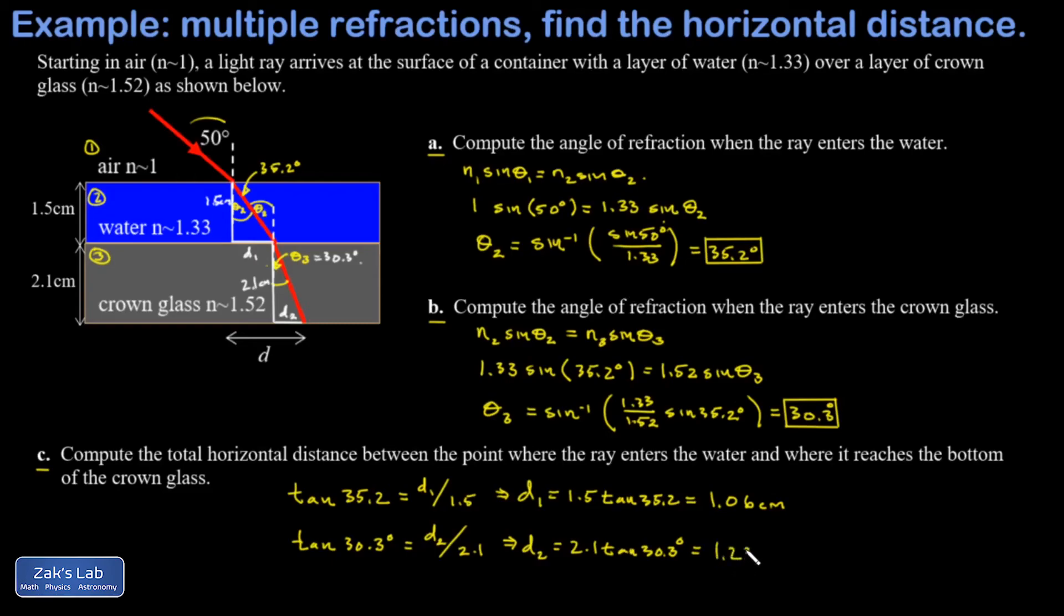Finally, I add up these two distances: d is d1 plus d2, and I get a total of 2.29 centimeters of horizontal displacement as the ray travels through both materials.